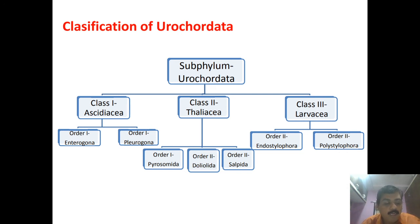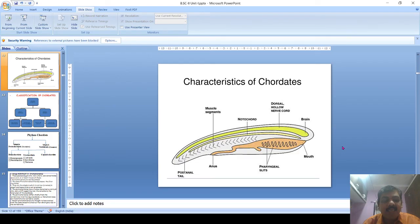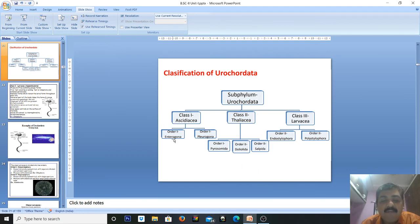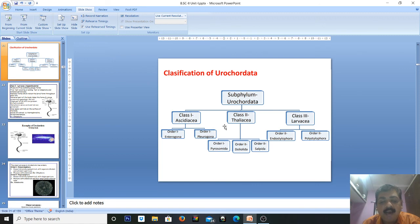So Urochordata is divided into three classes: Ascidiacea, Thaliacea, and Larvacea. In the next video we will discuss the general characteristics and classification of Urochordata in more detail, including the characteristics of classes Ascidiacea, Thaliacea, and Larvacea along with the characteristics of their orders. Thank you.